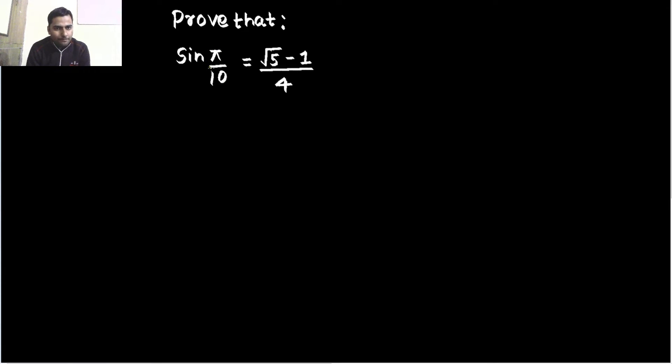So, now we have pi by 10 with us. What can we do here? Pi by 10. That is 18 degree, isn't it? Pi by 10 is 18 degrees. Not a good angle to see, but if you see 5 times this angle, if I consider 5 pi by 10, that is undoubtedly a good angle because 5 times of this is 90 degree.